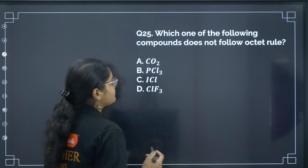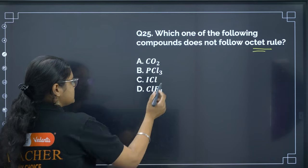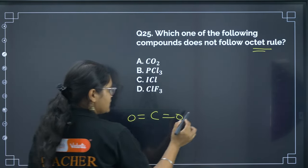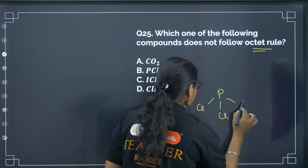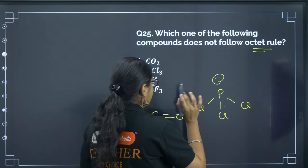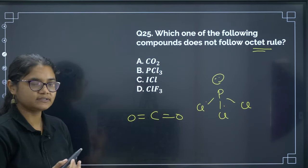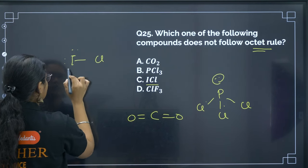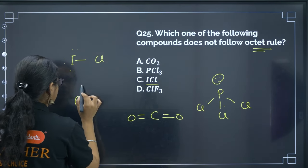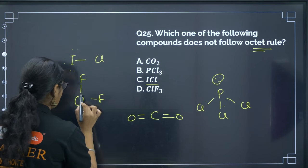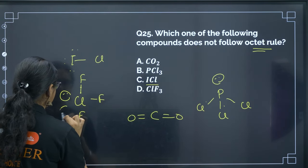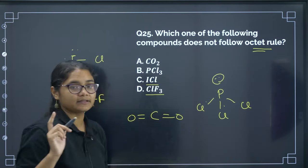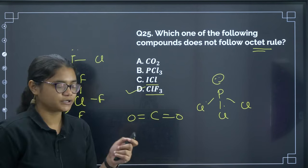Next: which compound does not follow the octet rule? CO2 follows the octet rule (8 electrons around each atom), PCl3 also satisfies the octet, ICl also satisfies it. ClF3, however, has 10 electrons around the central chlorine atom — it is an expanded octet and does not satisfy the octet rule. The correct answer is option D.